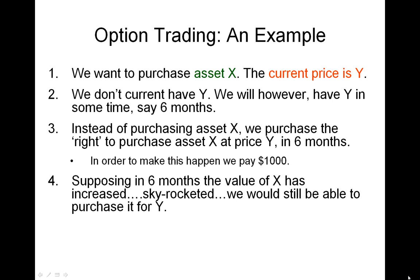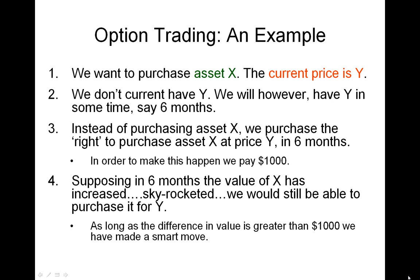Now why would we do this? When would this help? Let's say in 6 months the value of X increases — not just increases, but it skyrockets. Let's say it's 3 times what it is right now. We would still be able to purchase it for Y, the value right now. If it's triple in 6 months, it won't be Y — it will be 3Y. But we purchased the right to buy asset X in 6 months not at 3Y but at the current value Y. As long as the difference in value is greater than the $1,000 we paid for this right, we've made a smart move that results in a profit.